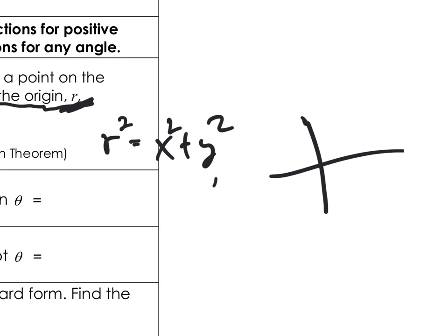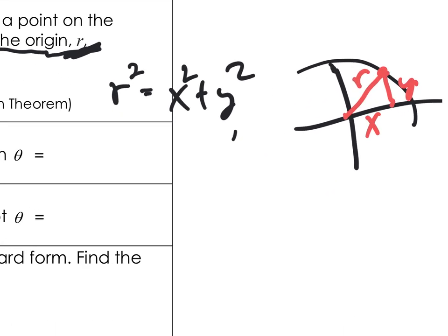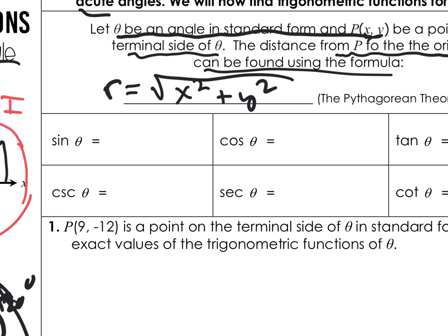If I draw to point P and drop a perpendicular down, that's my x, that's my y, and the hypotenuse will be your r. So if I square-root both sides of r² = x² + y², then r equals the square root of x² + y². The hypotenuse is always labeled r.